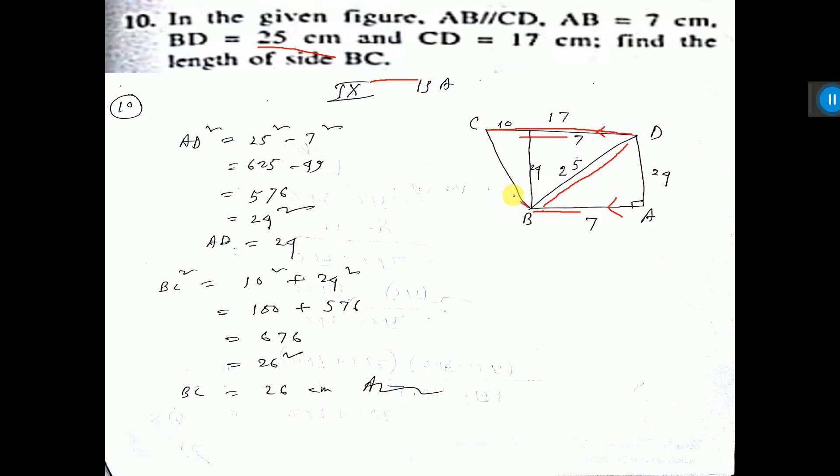Now see, this is a right angle triangle, so we can apply Pythagoras theorem. AD square equal to 25 square minus 7 square. Here you write: applying Pythagoras theorem.